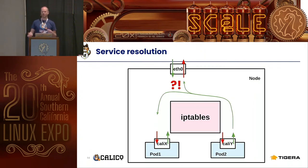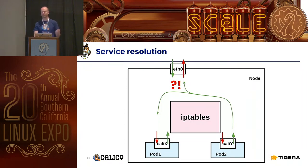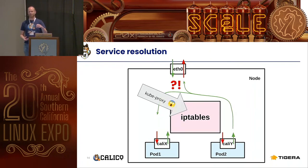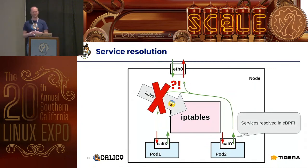When you use Kubernetes you're probably interested in using services. When a pod or process wants to connect to a service, how do we decide where traffic should go? Previously that was decided by kube-proxy as it wrote rules into iptables. But now we're largely bypassing iptables, so we have to do it — the eBPF data plane has to resolve the services.